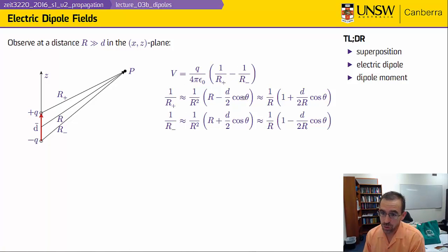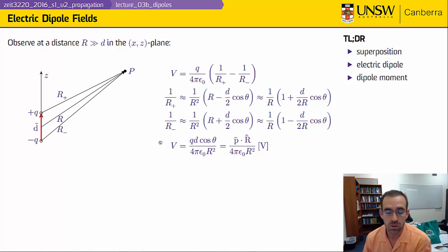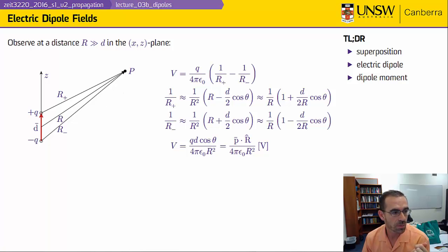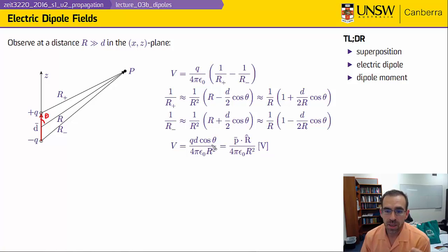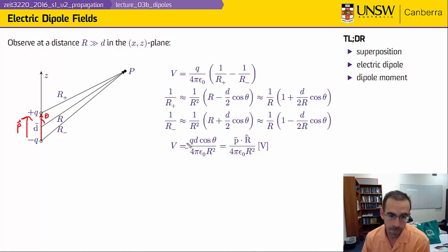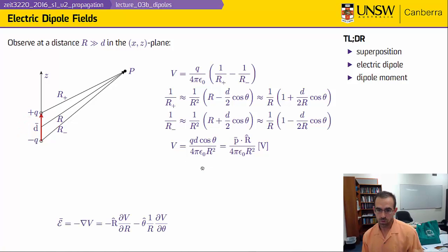When I combine these two and do the subtraction, I can write down that the electrostatic potential at an arbitrary position P is q·d·cosθ over r², where θ is my angle of observation. I recognize this is equal to the dipole moment p dotted into the unit vector pointing in the r direction, divided by 4πε₀r². Then I get the electric field by taking the gradient of that potential in spherical coordinates.